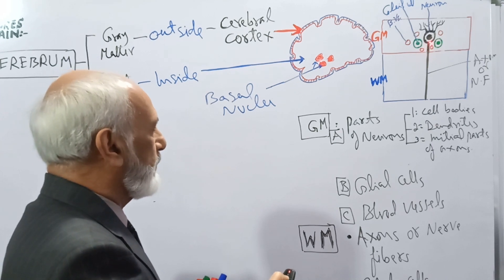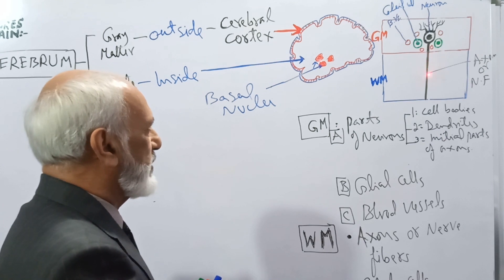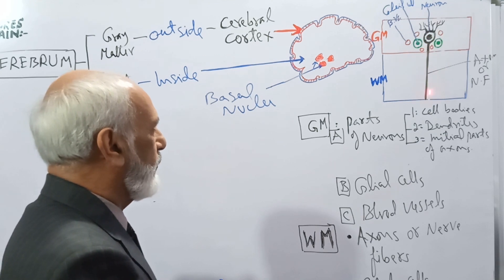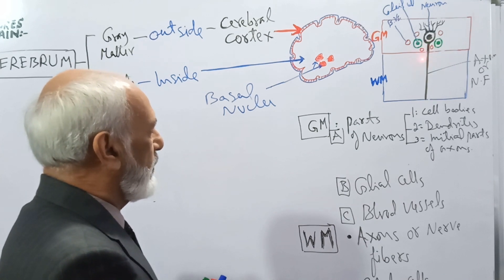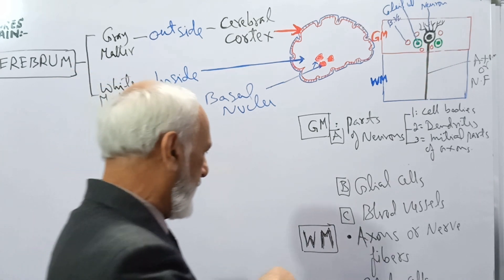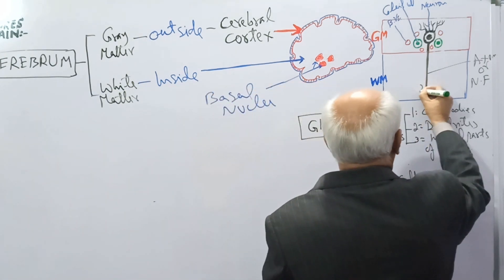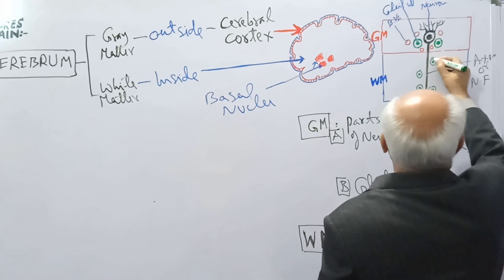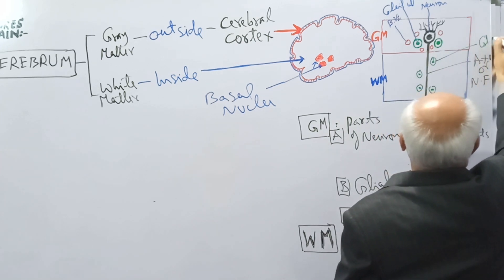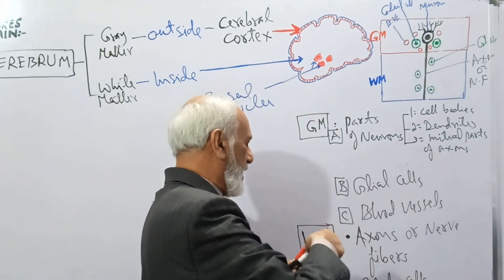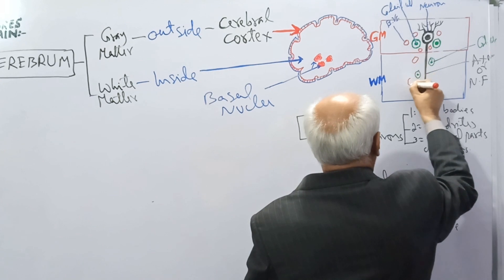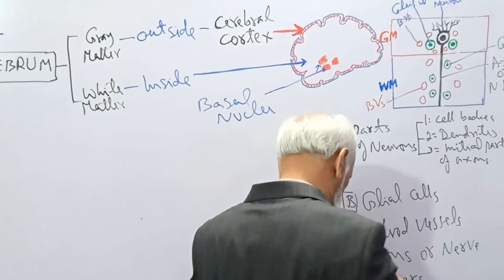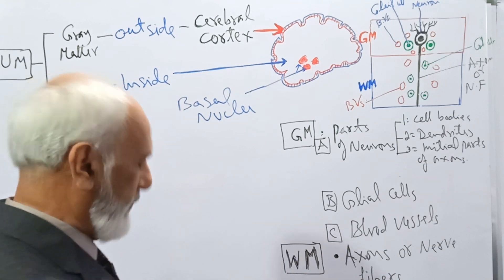The axons pass inside through the white matter. The white matter comprises axons or nerve fibers of the neurons — there are millions of such neurons. These neurons are supported by glial cells — different types of glial cells — and there are blood vessels in the white matter.